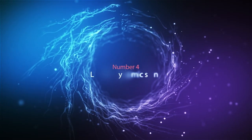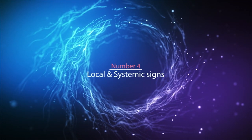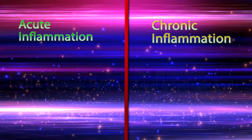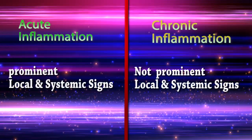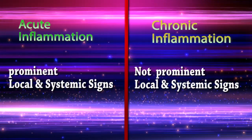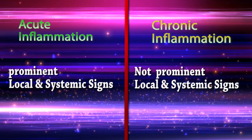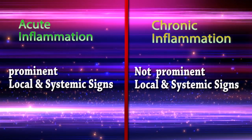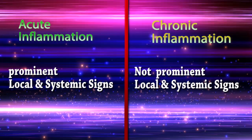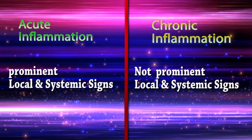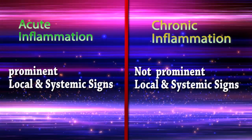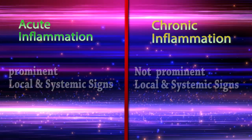Difference number four: local and systemic signs. In acute inflammation we can see prominent local and systemic signs such as swelling, redness, pain, and heat. In chronic inflammation conditions, local and systemic signs are not prominently seen.